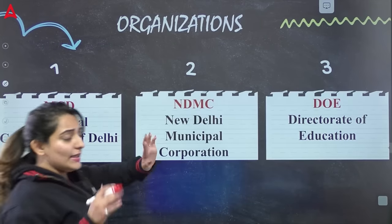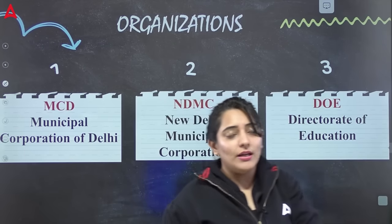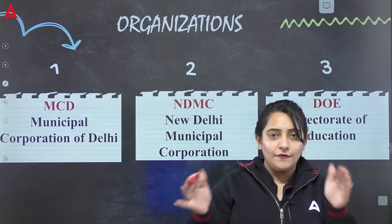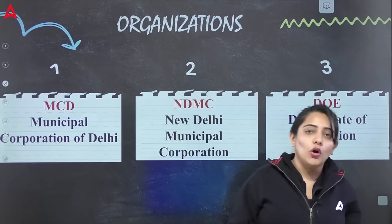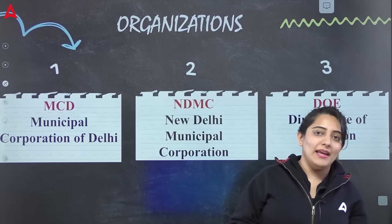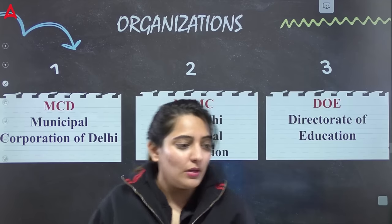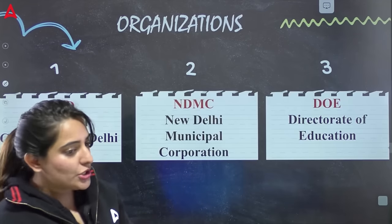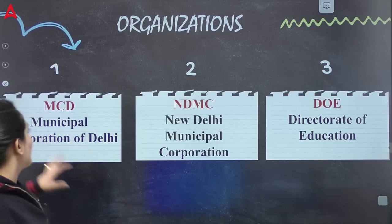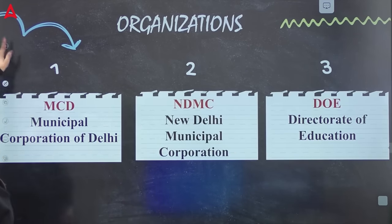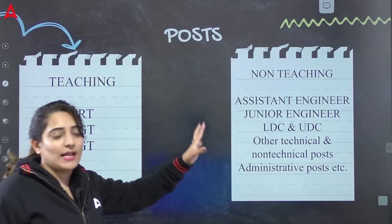Let's move on to the organization of DSSB. There are three different level organizations: one is MCD — Municipal Corporation of Delhi, one is NDMC — New Delhi Municipal Corporation, and one is DOE — Directorate of Education. The posts here include teaching and non-teaching, as mentioned.